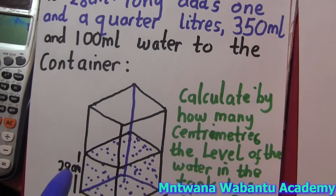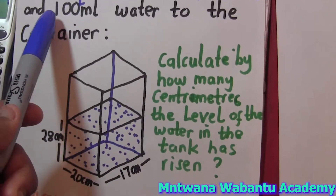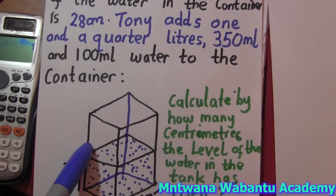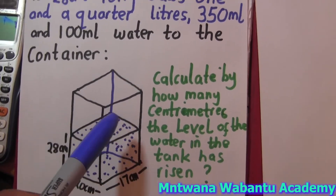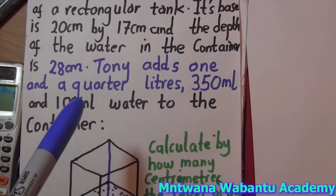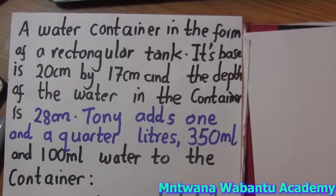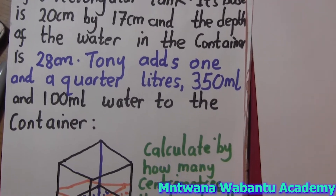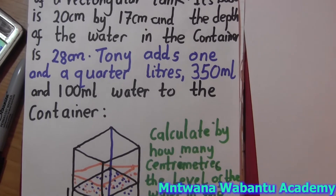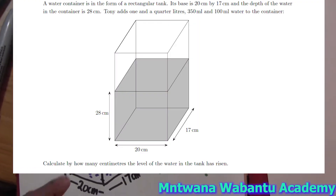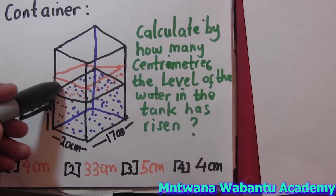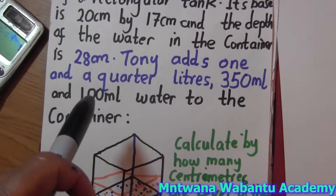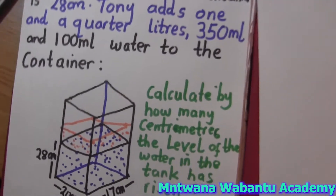The depth of water in the container is 28 centimeters. Now Tony adds one and a quarter liters, so the level of the water is going to rise. There's also 300 milliliters — wait, 350 milliliters — and then another 100 milliliters added to the container. After adding all of these together, the water level is going to rise to a new level that we need to find.